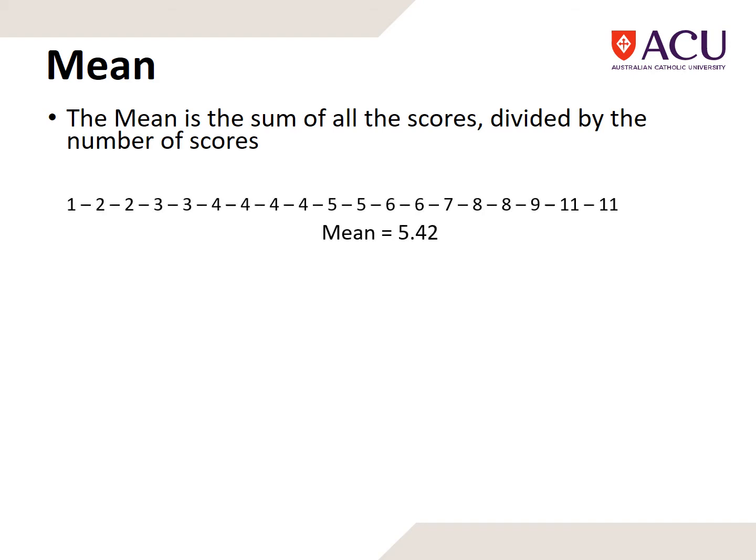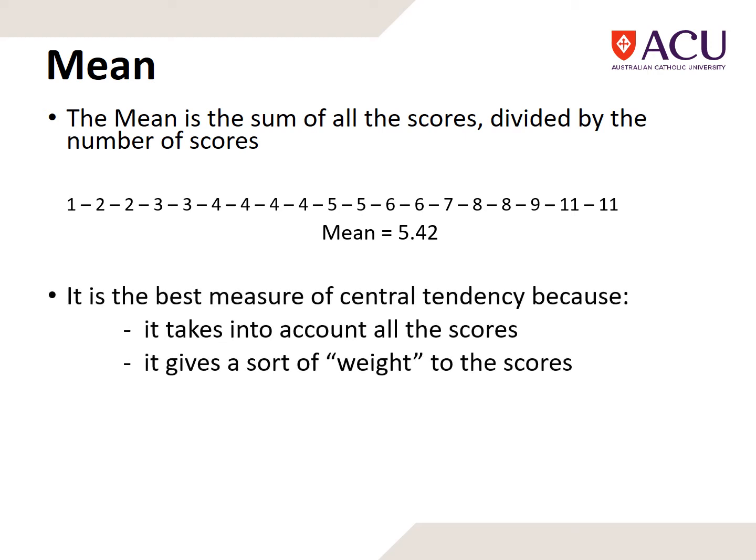You can see here we have a range of scores. We add them all up, divide by the number, and in this case we get something like 5.42. It's a really good measure of central tendency because it takes into account all of the scores and gives each score its own weight.